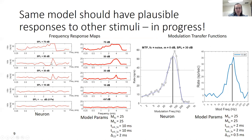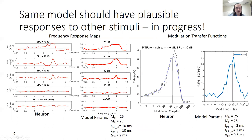Looking at the model's best guess for some of these responses, we have the actual neural response and the model's output. Some key features are there — for instance, the response map has the same characteristic frequency, and the modulation transfer functions have the same best modulation frequency. But work remains to be done: the spontaneous rates don't match, and there is an issue with the modulation transfer functions where the model suppresses everything at higher levels. This is a work in progress.